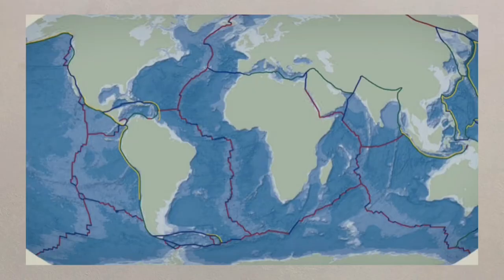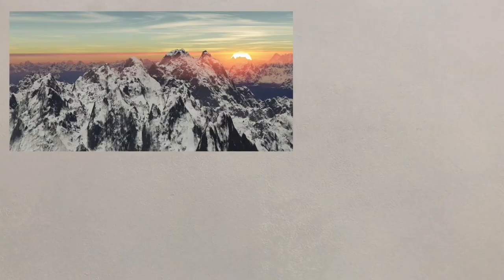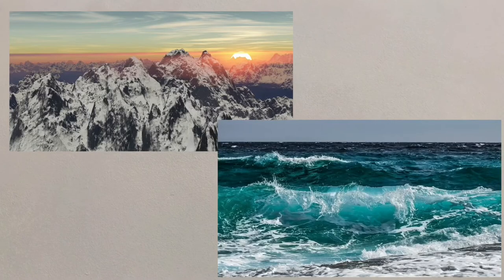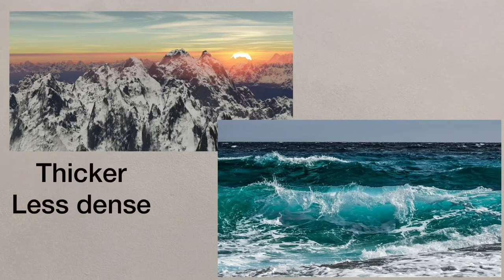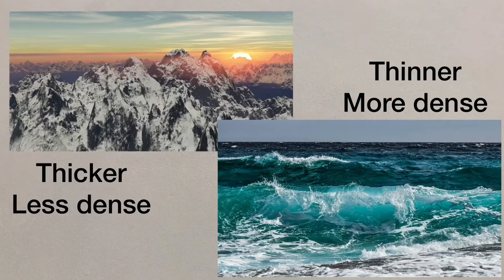The Earth is split into tectonic plates, and these can either be continental or oceanic. The continental crust is thicker but less dense, whereas oceanic is thinner but more dense.